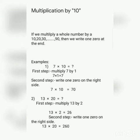Example number 2: if we multiply 13 by 20, in the first step we multiply 13 by 2, and the answer will be 26. In the second step we write one zero on the right side of 26, so it becomes 260. The answer is 260, which is the product of 13 and 20.